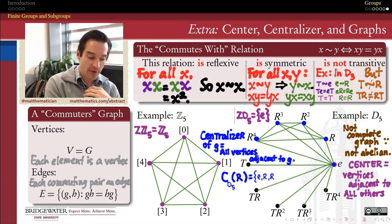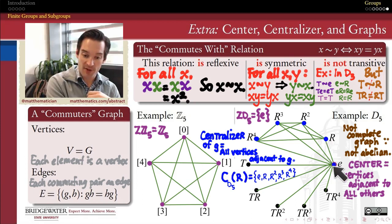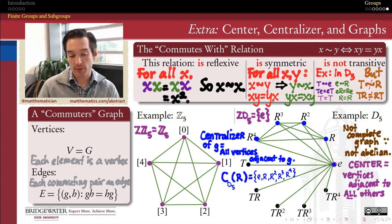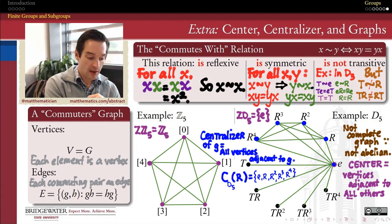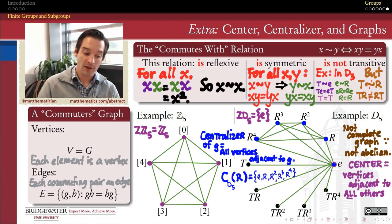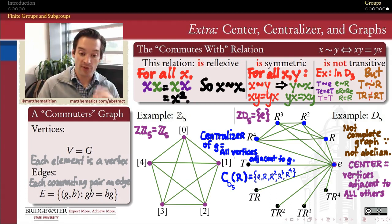The centralizer of R, for example, is the answer to: what shares an edge with R? The identity element does, because it shares an edge with everything. R also shares an edge with R squared, R cubed, and R to the fourth. So the centralizer of R inside the dihedral group of order 10 is the subset {e, R, R², R³, R⁴}. Not only is it a subset, but of course it's also a subgroup — every centralizer of a given element in a group is also a subgroup.